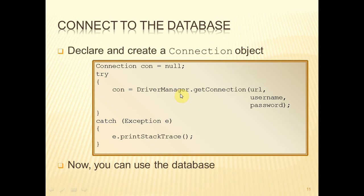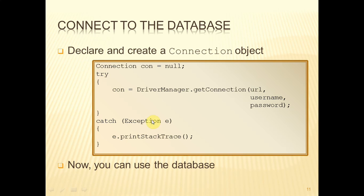Then in a try-catch block, we attempt to get a connection. We call DriverManager.getConnection and pass three parameters: the URL (that's what we prepared earlier), and then the username and password for that database. This method will attempt to connect to the nominated database using those credentials. If everything works, a reference to the connection object is returned and stored in our variable 'con'. If it doesn't work, it will throw an exception — probably an SQL exception — and in this example we're printing the stack trace, which is useful for debugging. If there are no exceptions, the connection is established and you're ready to use it.